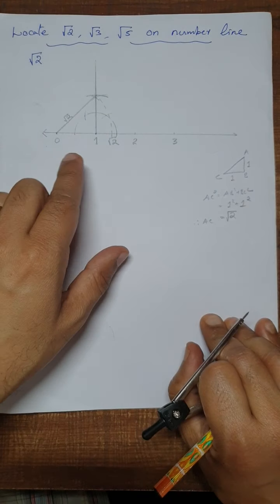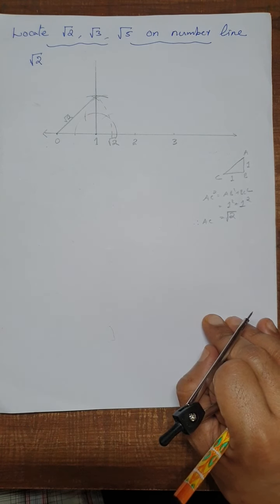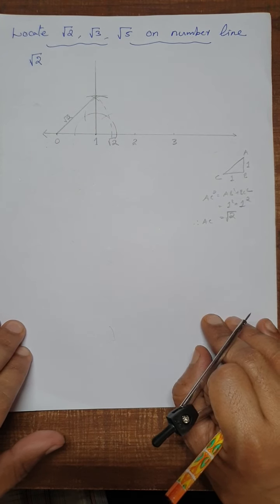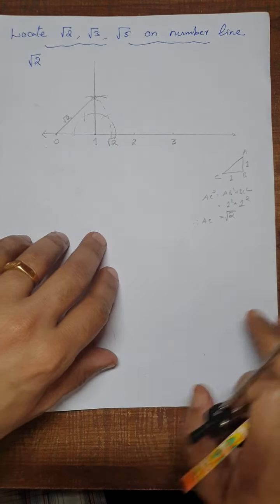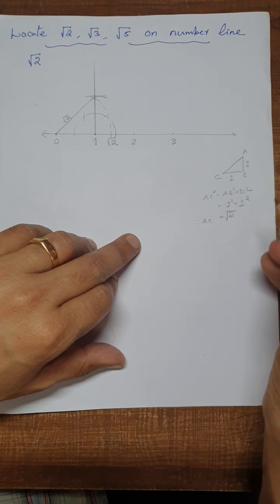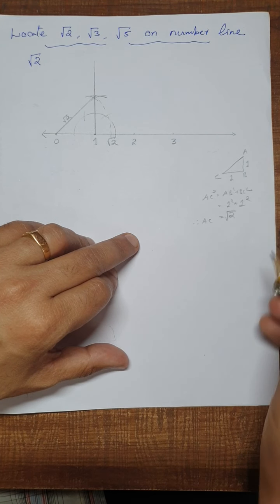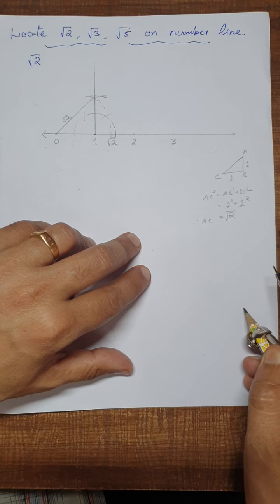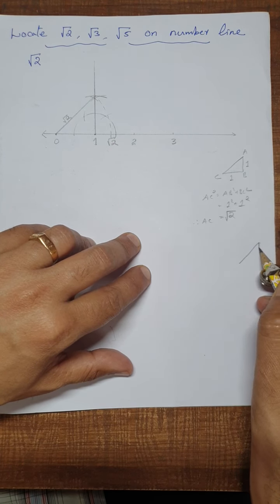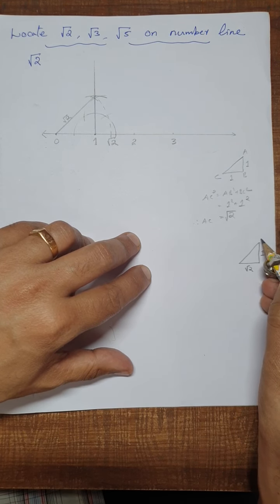So this is root 2 — we have located root 2 on the number line. Similarly we can locate root 3 on the number line. To locate root 3 we have to make a right triangle of base root 2 units and height one unit.